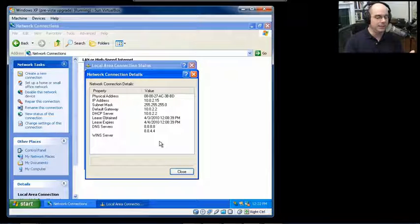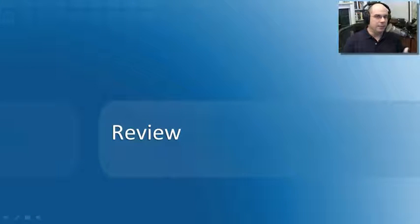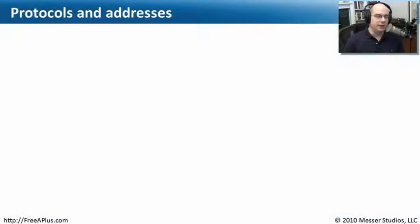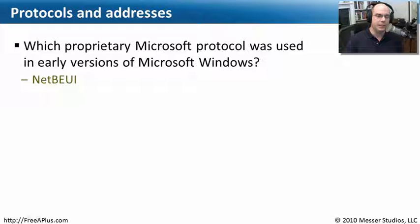So configuring IP addresses, subnet masks, gateways, and DNS is very simple from the Windows front end, whether you're doing it automatically or putting it in manually. Let's review what we remember about protocols and addressing. Our first question: which proprietary Microsoft protocol was used in early versions of Microsoft Windows? If you recall, the one for Microsoft is called NetBEUI — an addition to NetBIOS very specific to Microsoft machines. You don't really see that much anymore; these days Microsoft uses TCP/IP to communicate NetBIOS information.